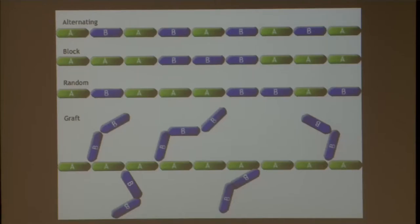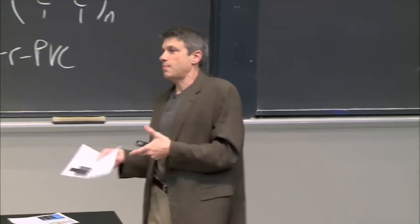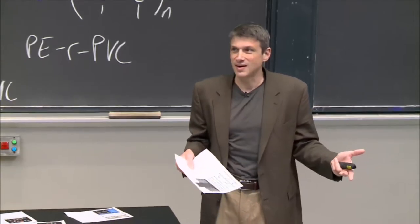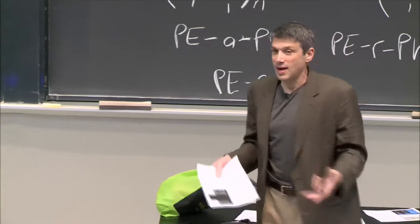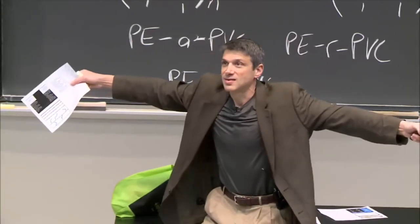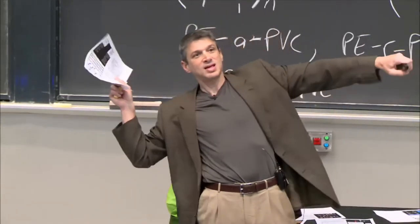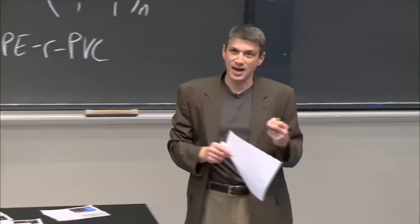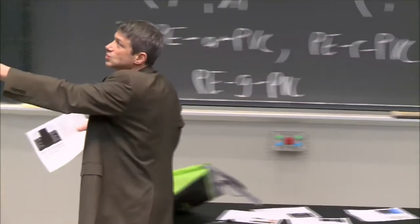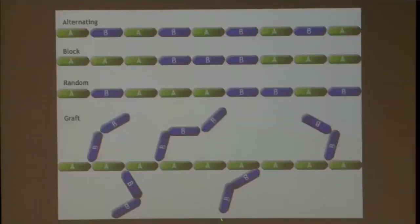When you make these blocks and control their properties, you control all sorts of things about how the polymer behaves. Imagine A bonds to A but not B, and B bonds to B but not A - like dissolves like. They're stuck in the same strand, trying to come together and stay apart simultaneously. All sorts of interesting things can be engineered when you control these blocks or grafts.